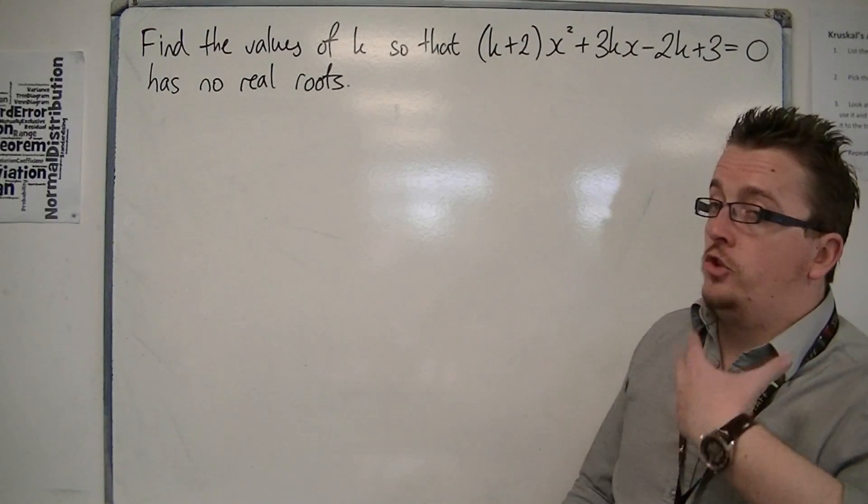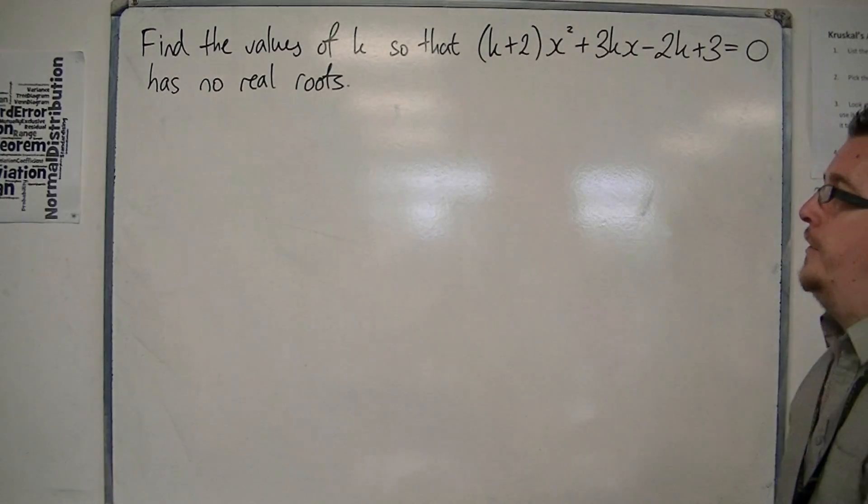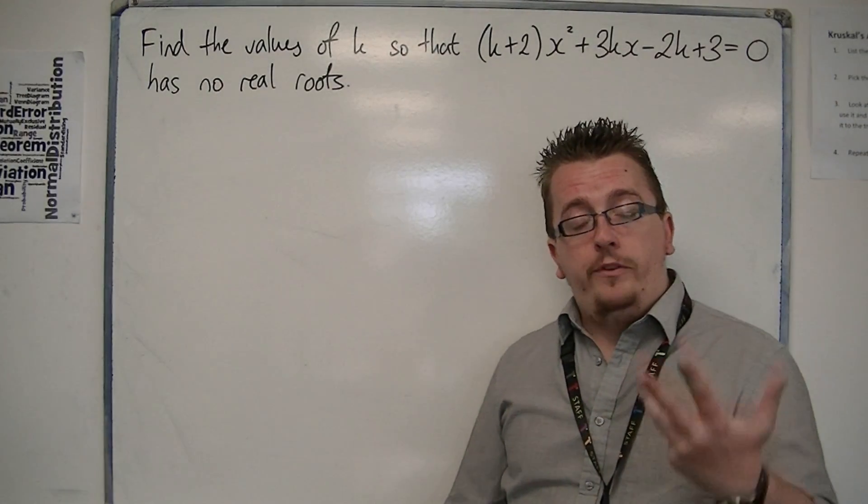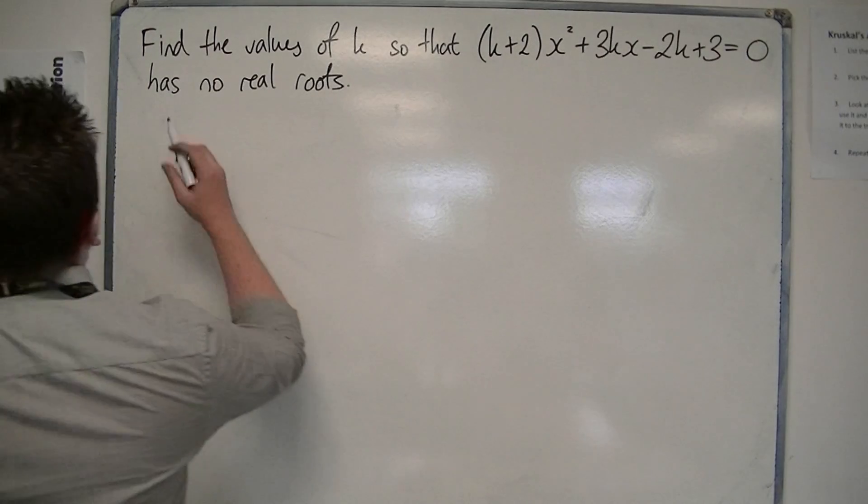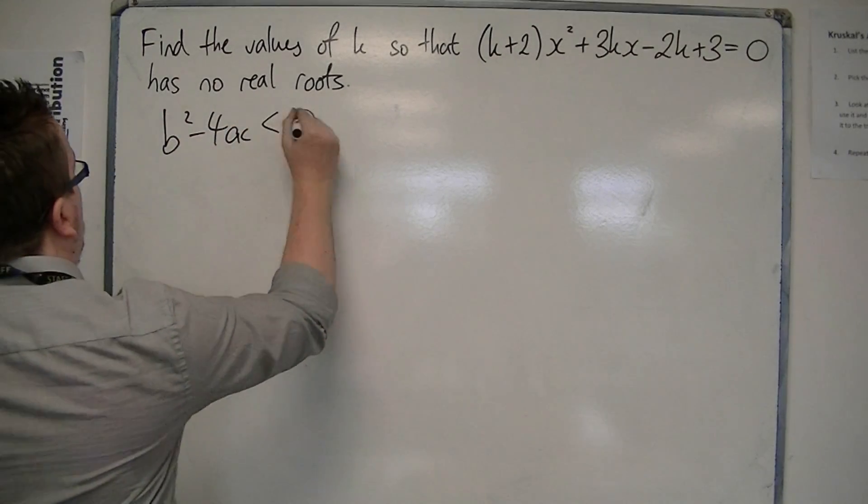So it's tricky because the numbers are tricky. That's really where this is going. Because we're wanting no real roots, the discriminant must be less than 0. So b² - 4ac must be less than 0.